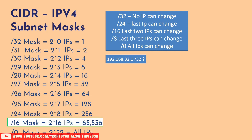Let's do a quick knowledge check. Suppose we have the IP 192.168.32.1/32. Based on what we've seen, what is the number of IPs in that subnet? The answer is 192.168.32.1 — just one IP. Because /32 means 2 to the power 0 IPs, which is 1. In a /32 mask, no IP can change, meaning this is the only IP in the range.